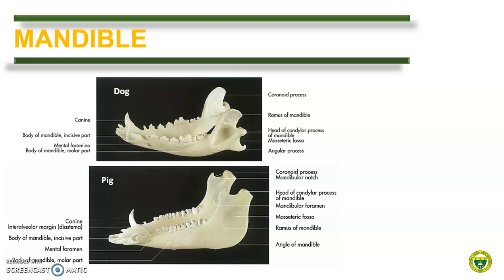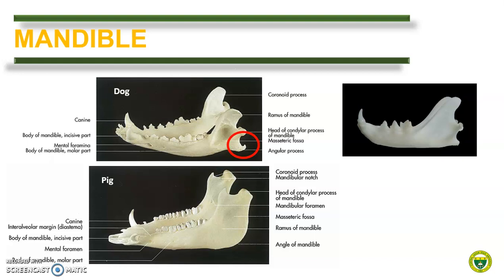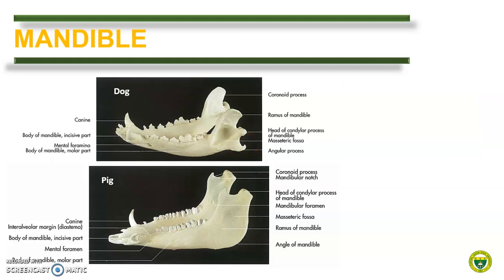Now let us compare the mandible of different animals. One distinct feature of a dog mandible is the presence of the angular process, which is present in all carnivores including cats. Note that this angular process is absent in other animals like pigs. Another feature of a dog mandible is the very deep masseteric fossa. The pig mandible is described as massive like the skull, with a very strong attached mandibular symphysis. The canine teeth are present and often termed as tusks. One feature of the pig mandible is the leveled coronoid and condyloid processes — they are at the same level, in contrast to most animals where the coronoid is higher than the condyloid process.